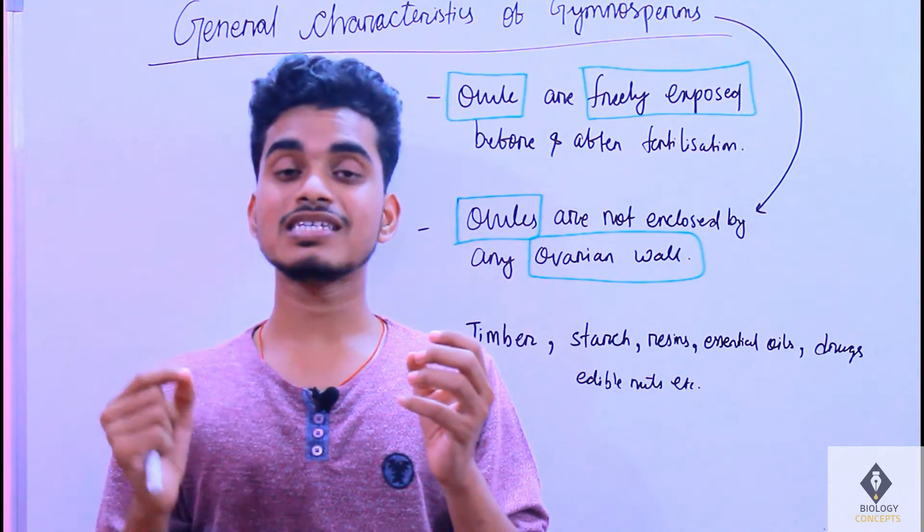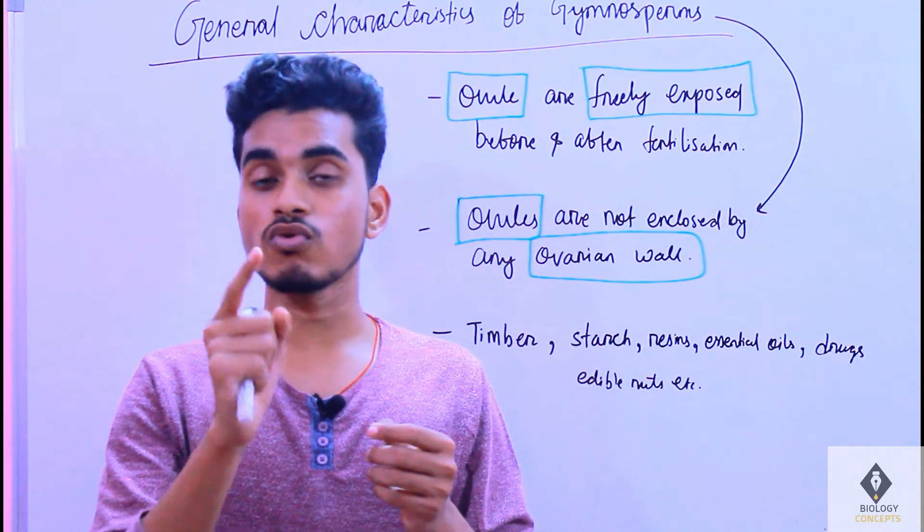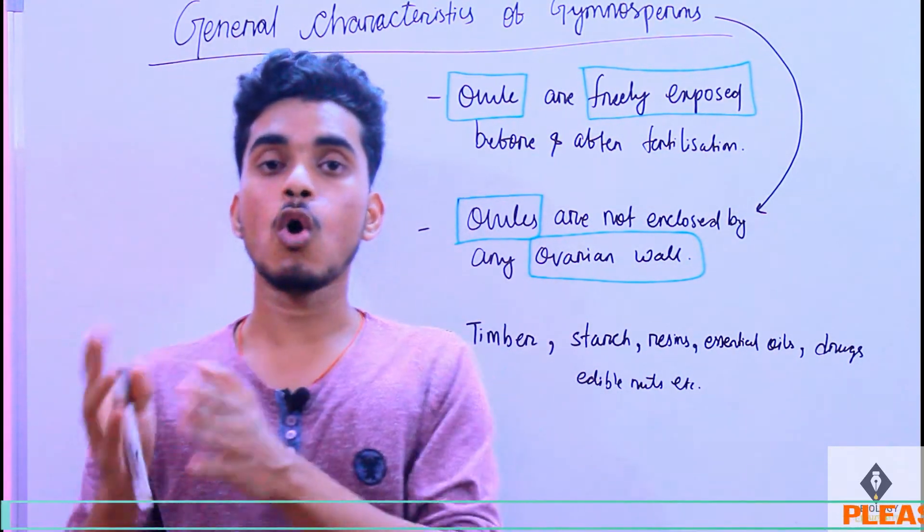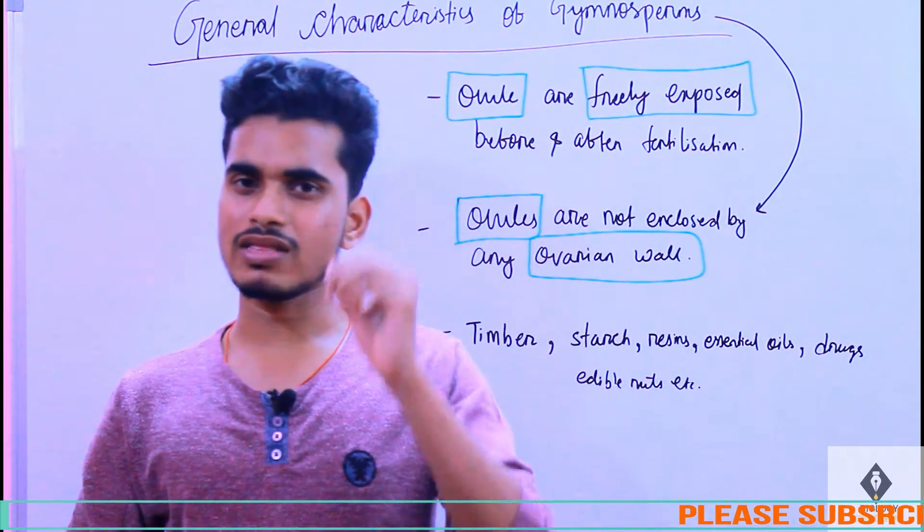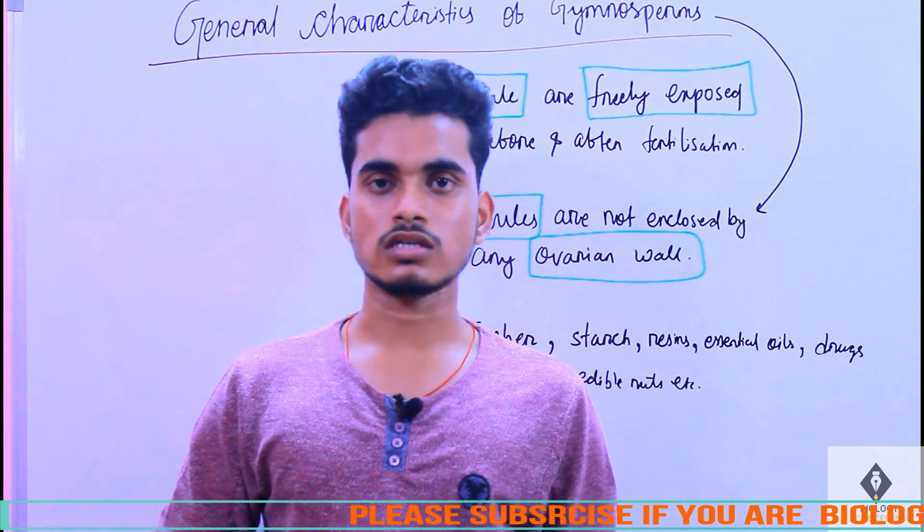Both are having ovules, but what is the basic difference? Angiosperms are having the ovarian wall, or you can say it has an ovary. Angiosperms are having the ovary while gymnosperms are not having the ovarian wall. So gymnosperms have naked seeds.